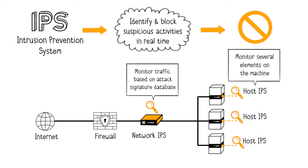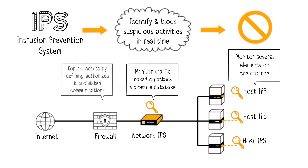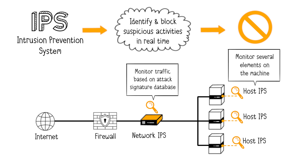It's important to clarify the difference between a firewall and a network IPS. The role of a network IPS is to detect attacks on a network based on an attack signature database and to block them if necessary. The role of a firewall is different, as it aims to control access by defining authorized or prohibited communications — for example, outgoing direct accesses in HTTP to the internet are prohibited and must pass through the company's proxy. However, modern firewalls may include IPS functions, leading to confusion, but they are in fact complementary functions.